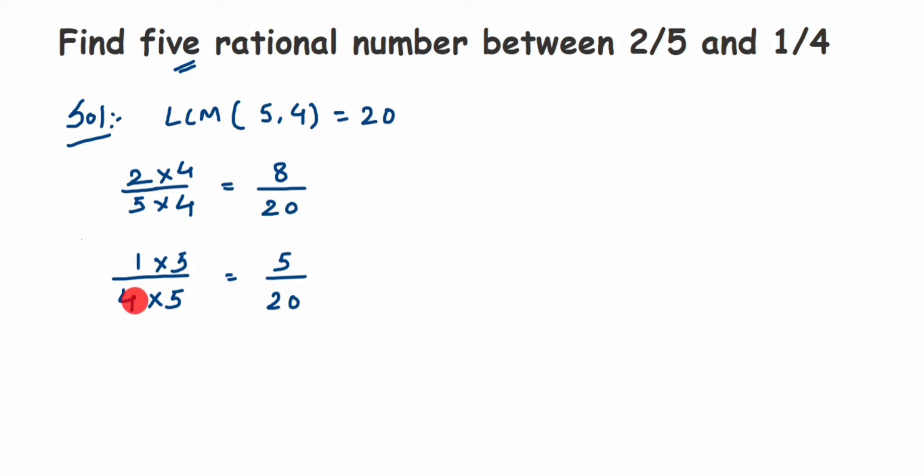So 2 by 5 is equivalent to 8 by 20. Instead of taking 2 by 5, we're going to take 8 by 20. Instead of taking 1 by 4, we're going to take 5 by 20. Now we're asked to find 5 rational numbers between these two. But if you look at the numerator, we have 5 and we have 8. In between these two numbers, we have 6 and 7, which are only two numbers. So we cannot find 5 rational numbers.